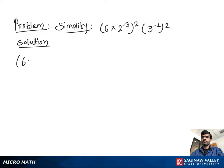Simplify: 6 times 2 to the negative 3 all to the square times 3 to the negative 1 all to the square.